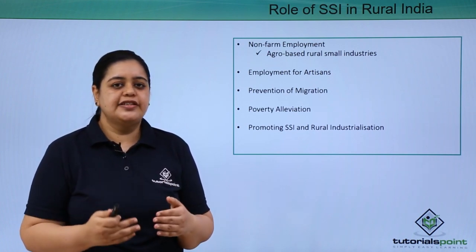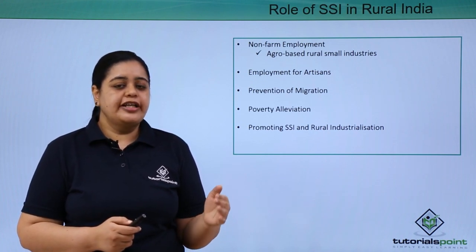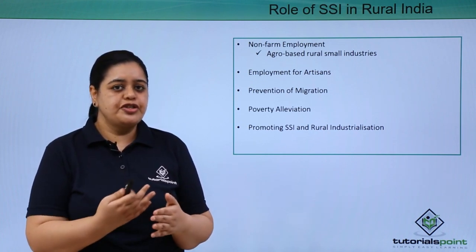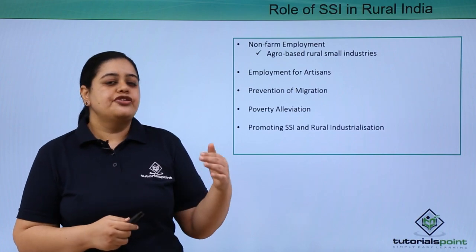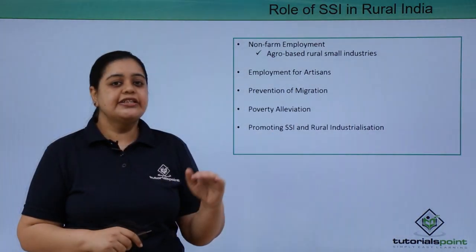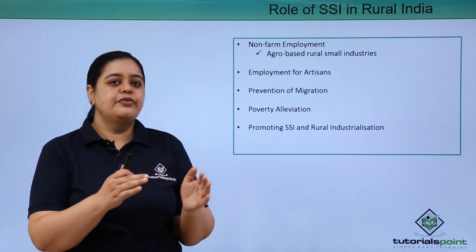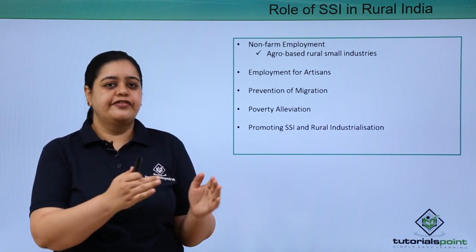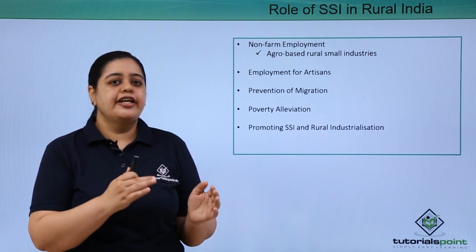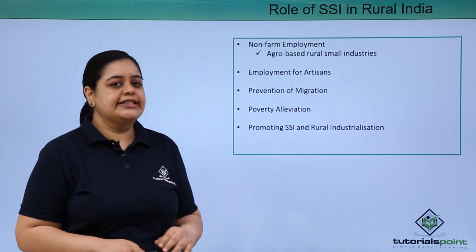Overall, SSI plays a very important role in developing the weaker sections of society, thereby alleviating poverty and other problems such as malnutrition among children, and ensuring there is no disguised employment in the agricultural sector — by providing people who are excessively working on agricultural land with opportunities to work with SSIs.